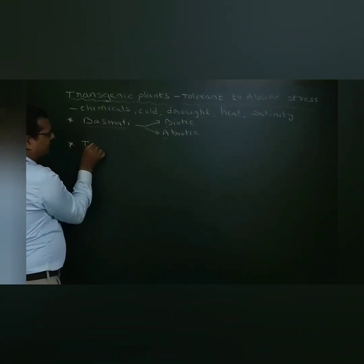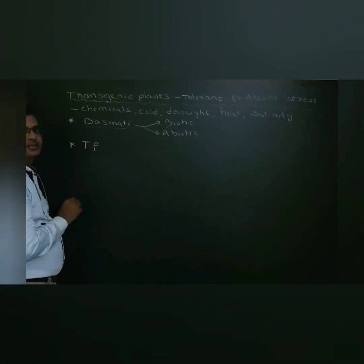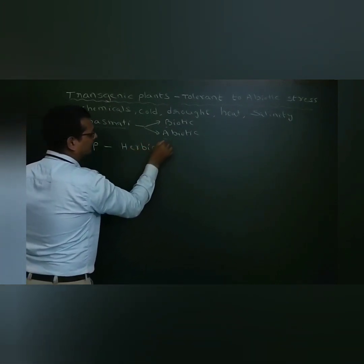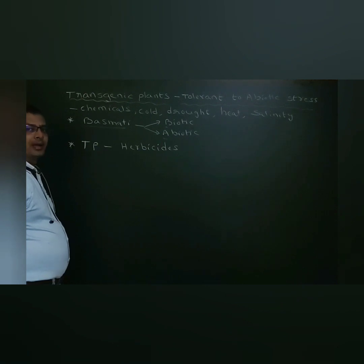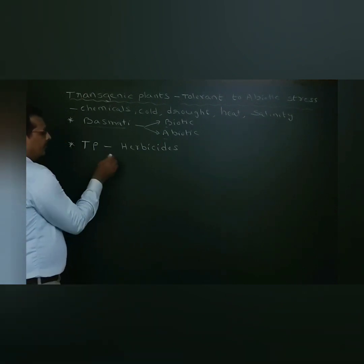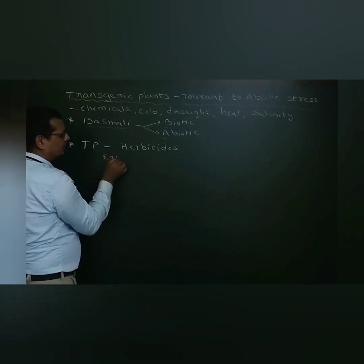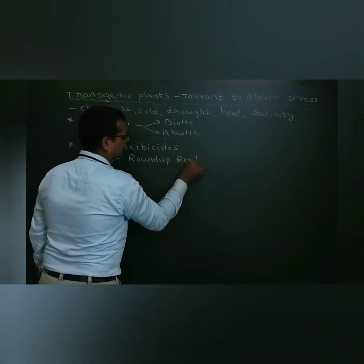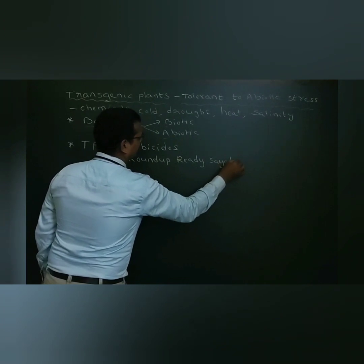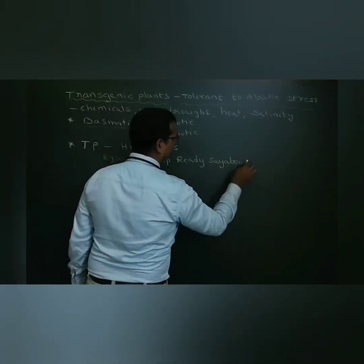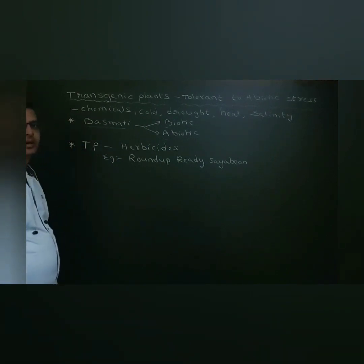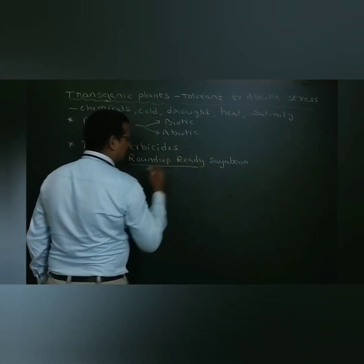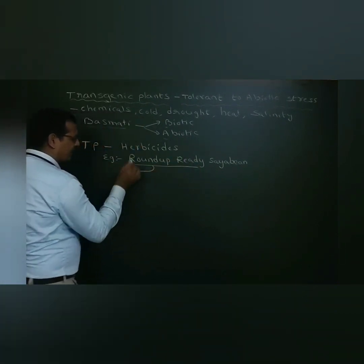Another example of transgenic plants tolerant to abiotic stresses is Roundup Ready Soybean. Roundup Ready Soybean is a genetically modified crop.